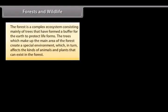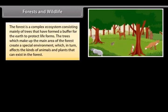The forest is a complex ecosystem consisting mainly of trees that have formed a buffer for the earth to protect life forms. The trees which make up the main area of the forest create a special environment, which in turn affects the kinds of animals and plants that can exist in the forest.